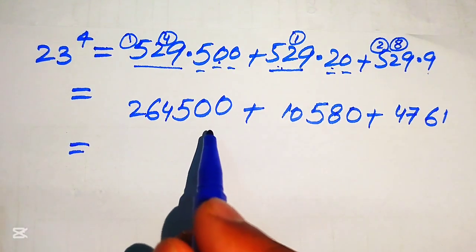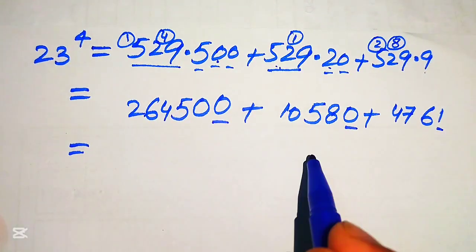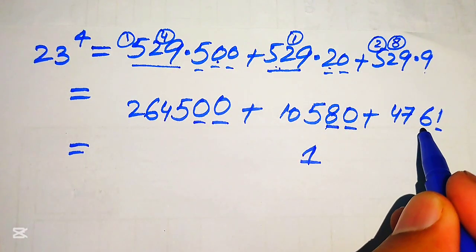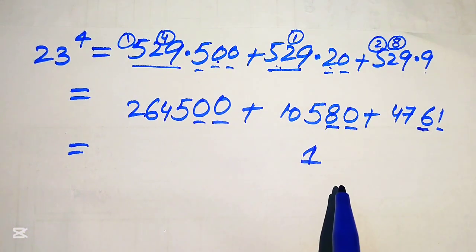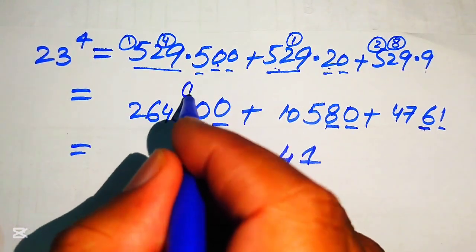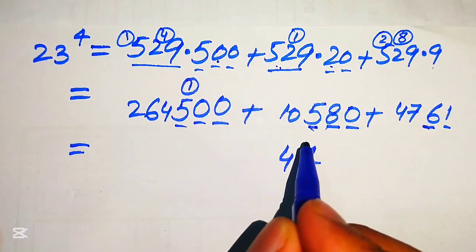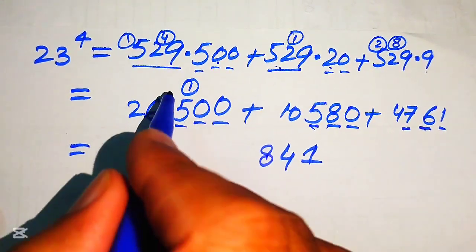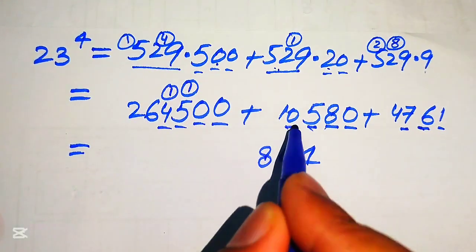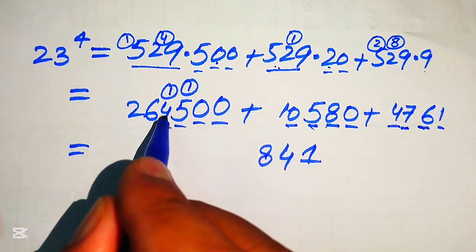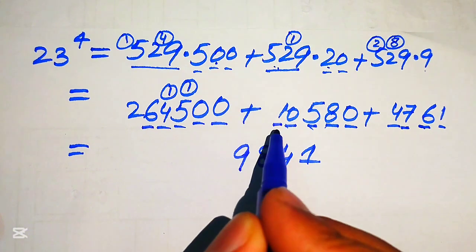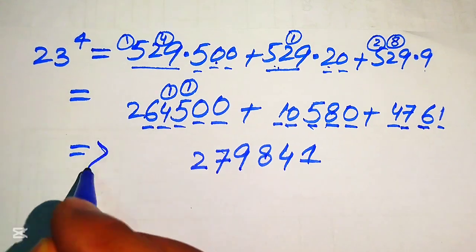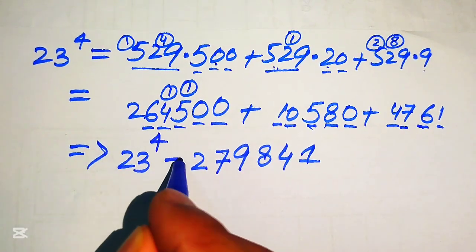Now we sum up all of these values: 0 plus 0 plus 1 is 1; 0 plus 8 plus 6 is 14, write 4 carry 1; 5 plus 5 plus 7 plus 1 is 18, write 8 carry 1; 4 plus 0 plus 4 plus 1 is 9; 6 plus 1 is 7; and finally 2. So 23 to the power of 4 equals 279841.